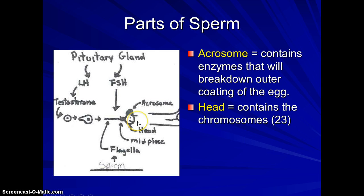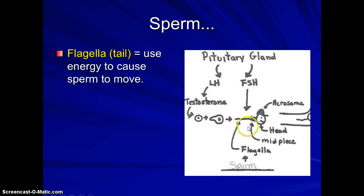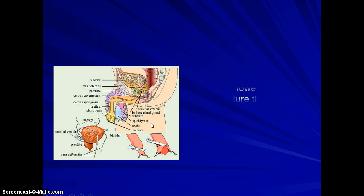The head is what contains the chromosomes — it contains 23 chromosomes. The midpiece is behind the head and contains mitochondria, which will make ATP to allow the sperm to swim. Behind the midpiece is the flagella, the tail. The ATP produced by the midpiece allows the flagella to move, allowing the sperm to travel up the reproductive tract of the female.